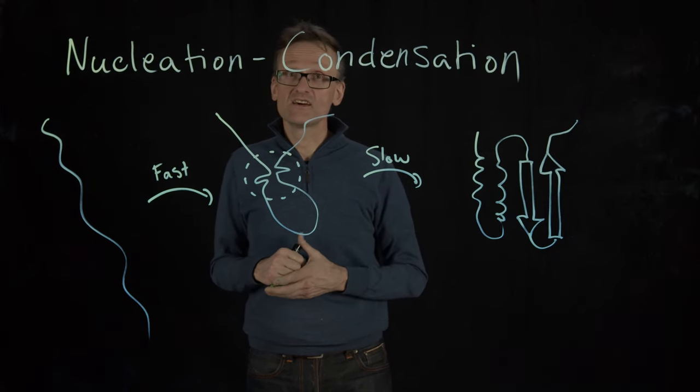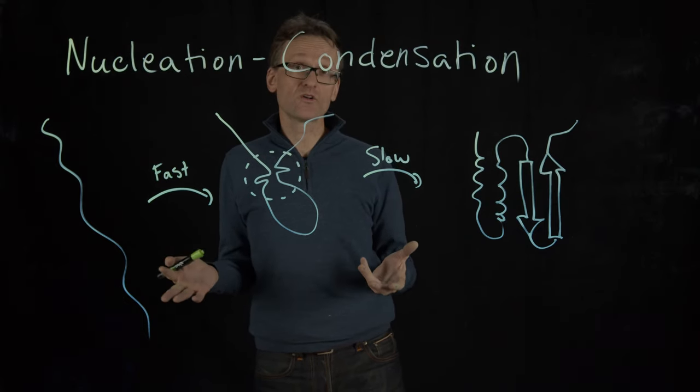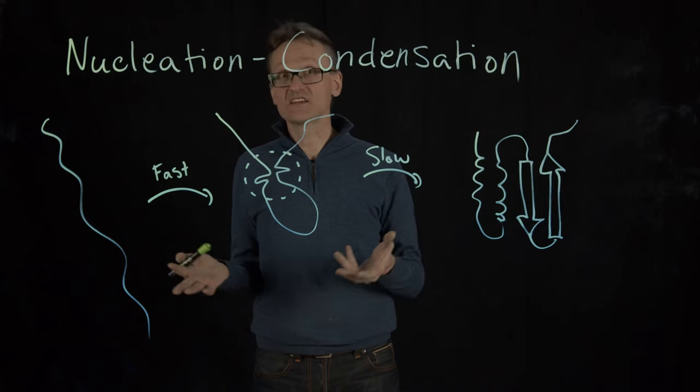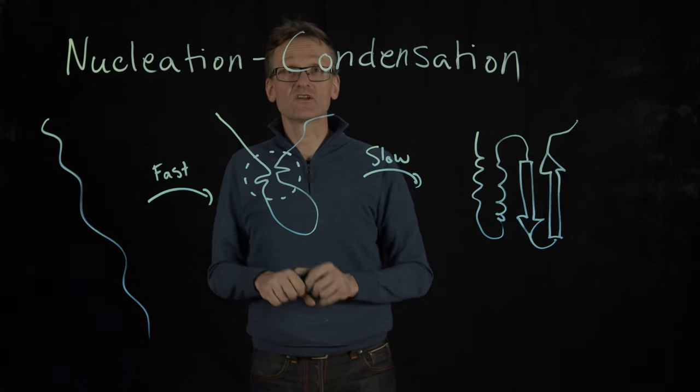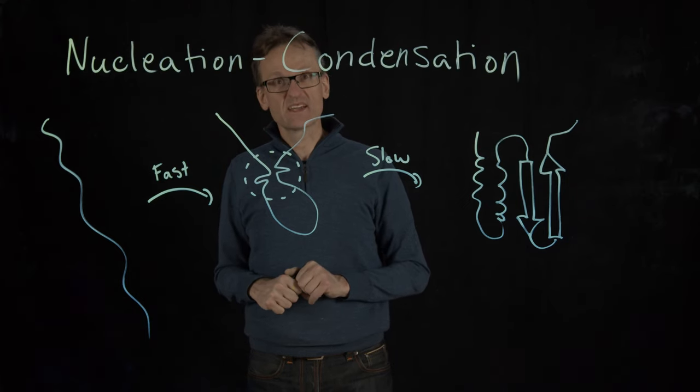In the diffusion collision model, alpha helix and beta sheet might be in a local free energy minimum—a stable part—but this nucleus is likely a local free energy maximum, which complicates things.